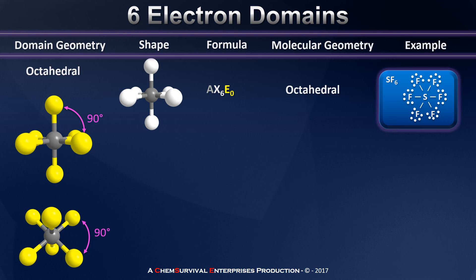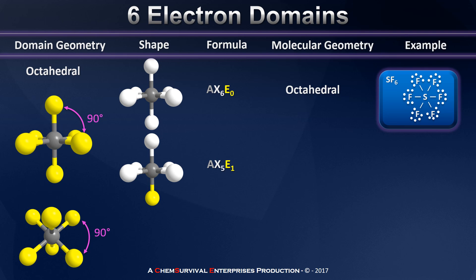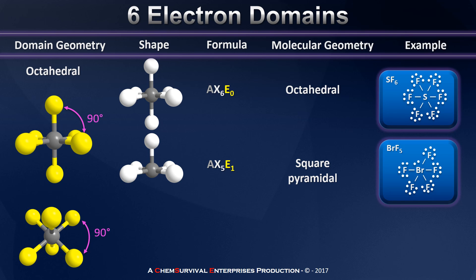An example of an octahedral compound is sulfur hexafluoride, in which the central sulfur atom has six domains, all bonding to a fluorine atom. When we place our first lone pair into this compound, we can put it anywhere because all positions are identical. This creates an AX5E1 compound, and removing the appearance but not the influence of the lone pair gives what traces out to be a pyramid with a square-shaped base — so we call this geometry square pyramidal. An example is bromine pentafluoride, with five bonding electron domains and one lone pair.